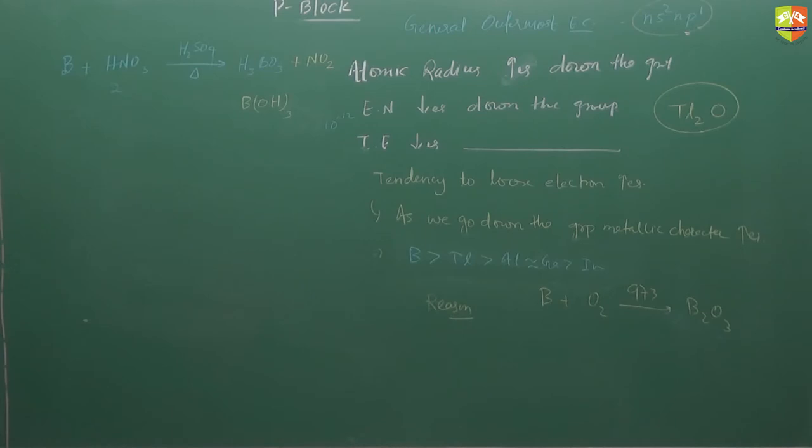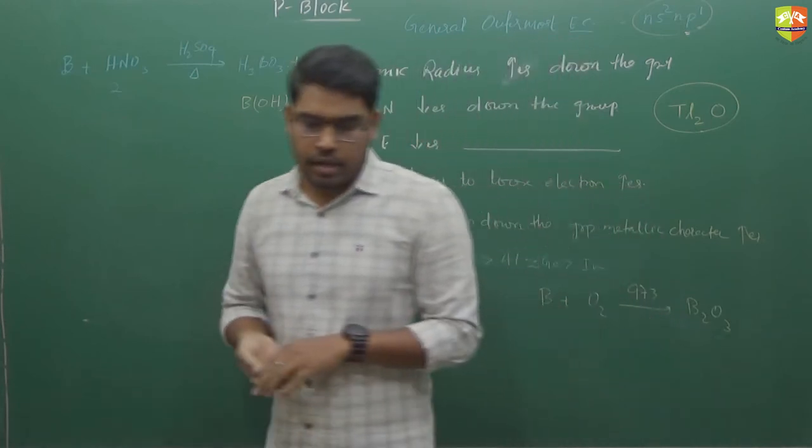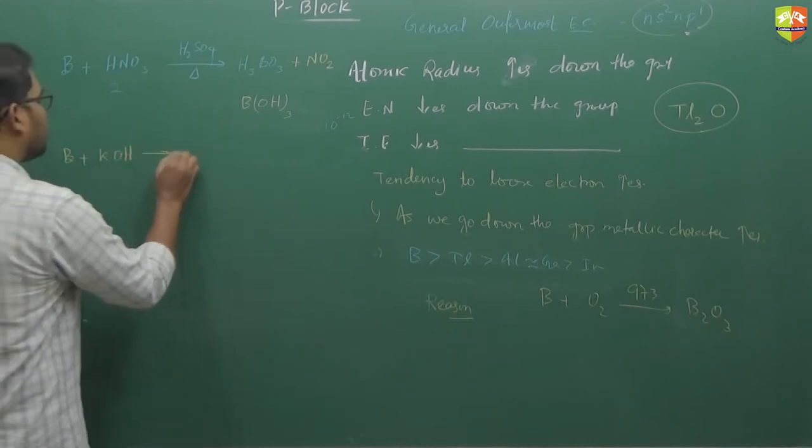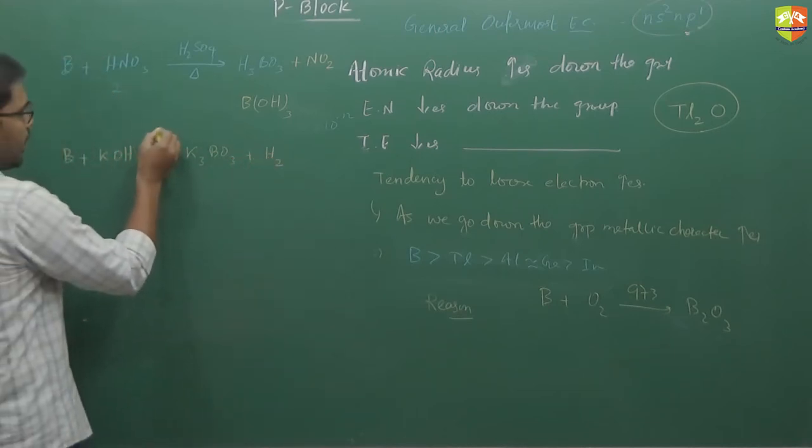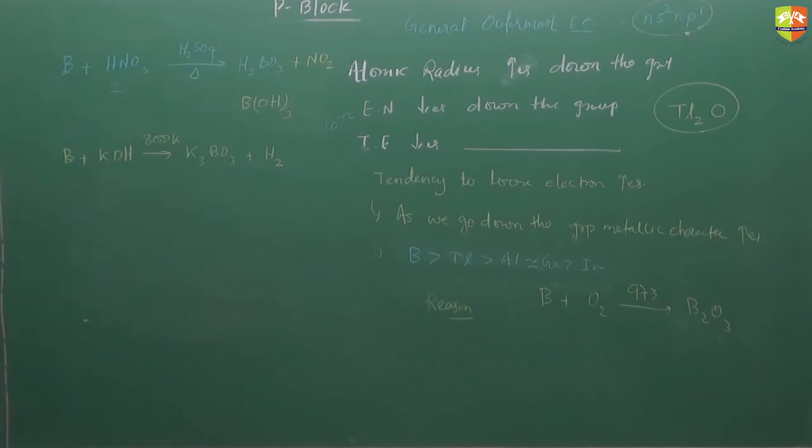Next write down, boron reacts with alkali solution at higher temperature, more than 773 kelvin. Boron plus KOH forms K3BO3 and hydrogen gas. Generally the reaction of boron is at high temperature only, you can take around 800 kelvin. H2 gas evolves in this process.